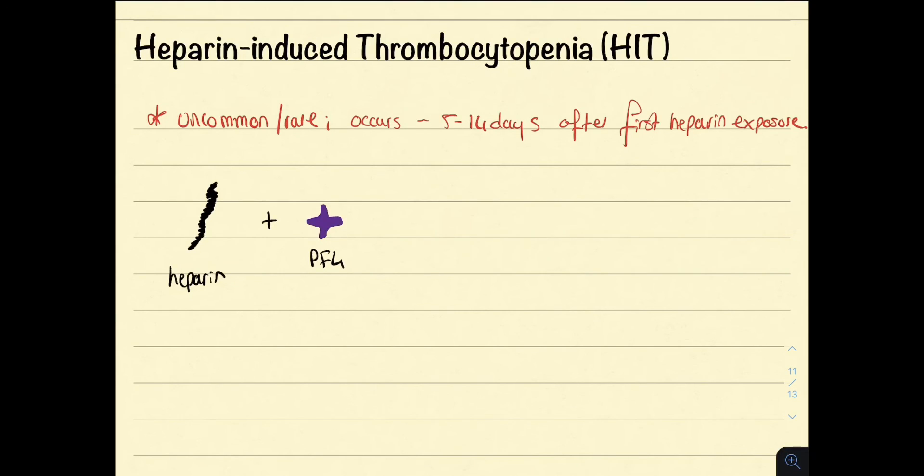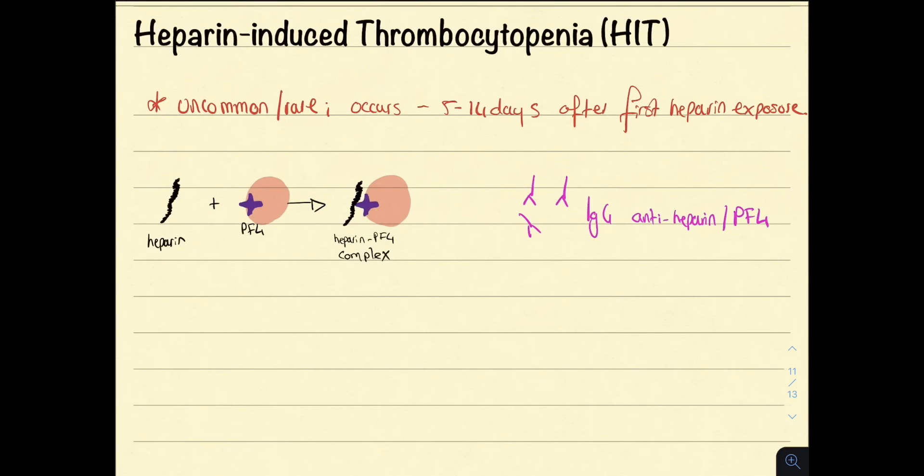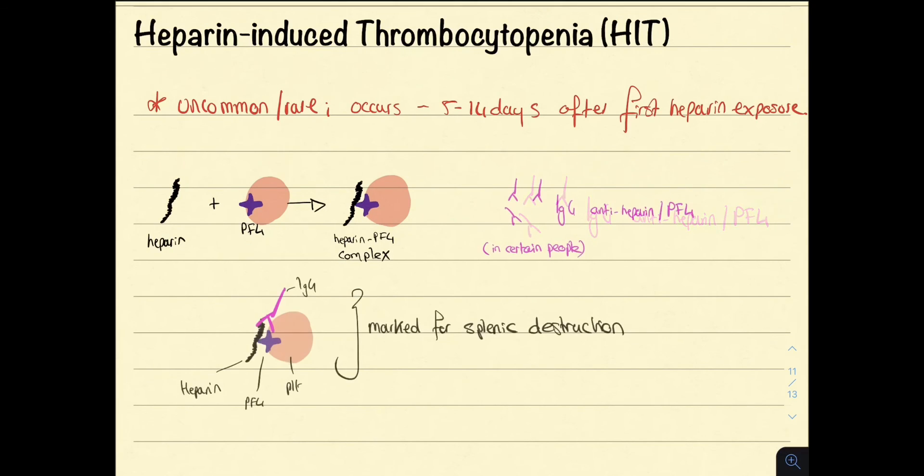So what we have here is heparin, and platelet factor IV, or PF4, expressed on the platelets. Heparin binds to the PF4. In some individuals, the immune system does not like this complex, so it produces IgG antibodies against it. These antibodies bind to the heparin-PF4 complex on platelets, marking it for splenic destruction.